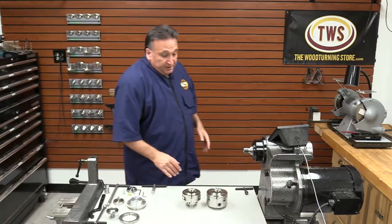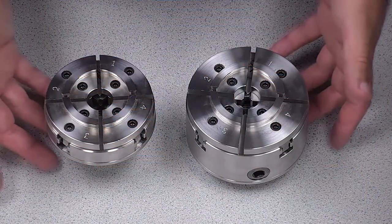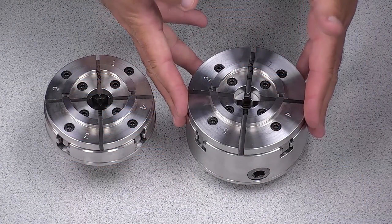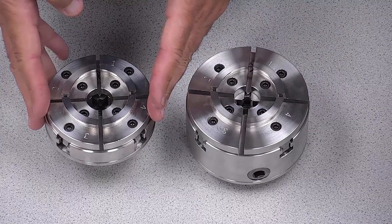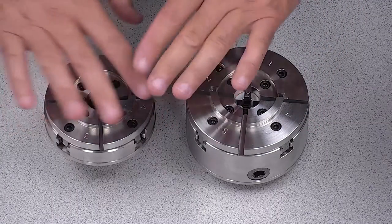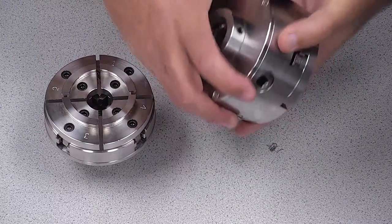The most noticeable difference between the two chucks is in the weight. The SK114 comes in at about eight pounds. The SK100 about five pounds and that's because of the design of the gearing system.